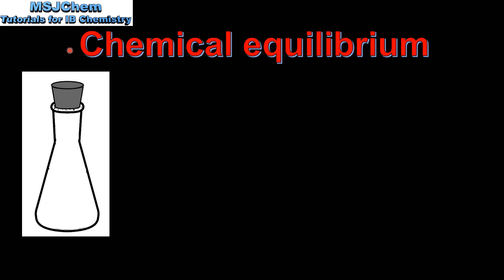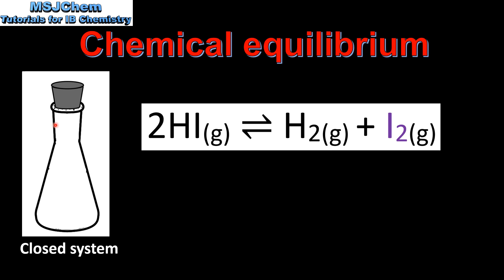We've just looked at physical equilibrium in which no new substances are produced. Next we look at chemical equilibrium where we have a chemical reaction occurring and new substances will be produced. Let's say we have an empty flask and we introduce some hydrogen iodide (HI) into the flask and put a stopper on top, so we have a closed system.